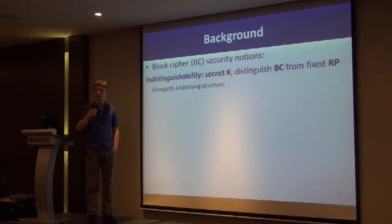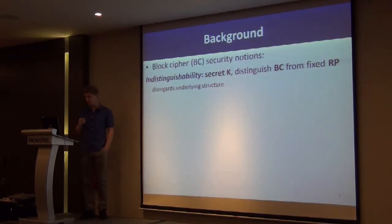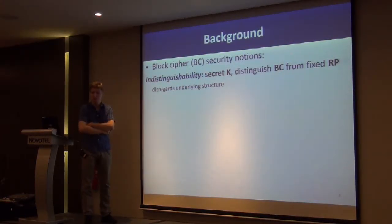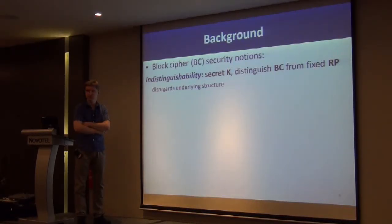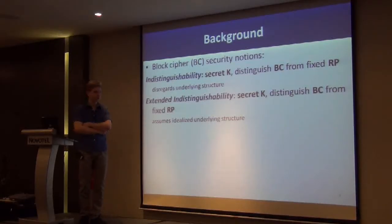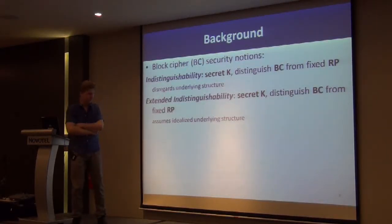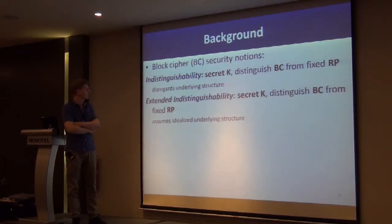I'll start with a brief background on security models for block ciphers. The classical model was indistinguishability, where you try to distinguish the block cipher from a fixed random permutation with a secret key. This regards the underlying structure, which is why people came up with extended indistinguishability — quite the same, but additionally you get access to the underlying primitives, reflecting the structure slightly better than plain indistinguishability.